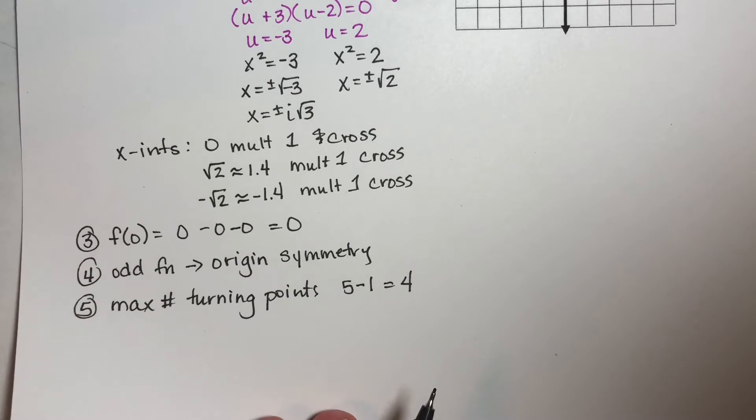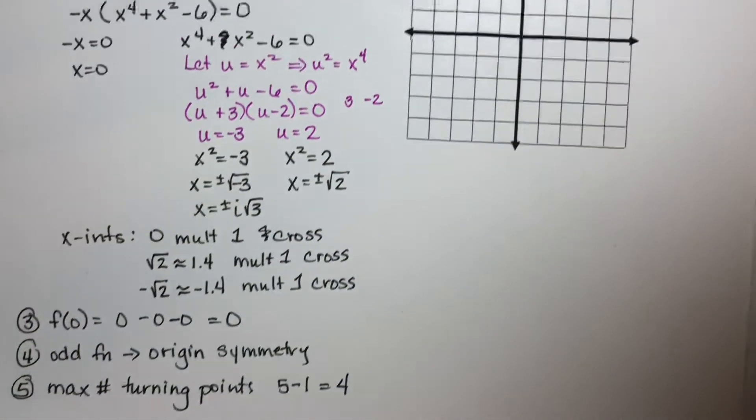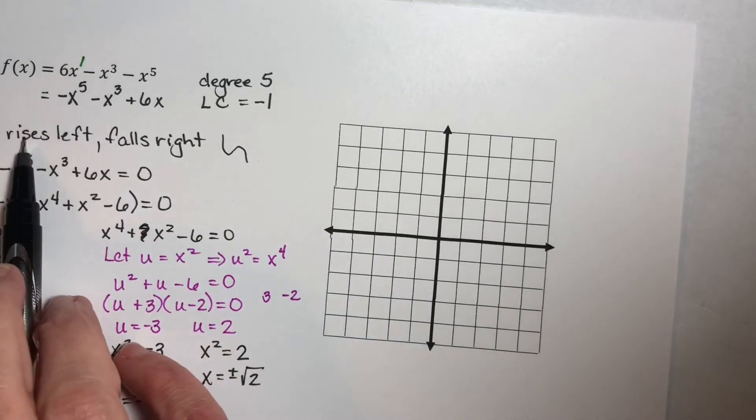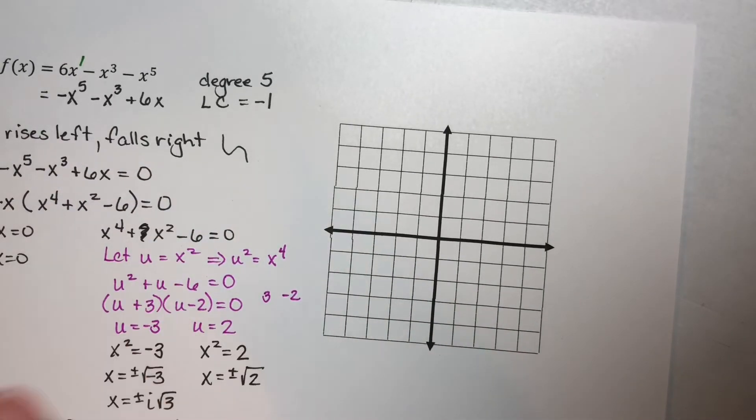So let's put all this information together on a graph so we can see what we've got. I know that it rises on the left and it falls on the right, so I'll make that happen.